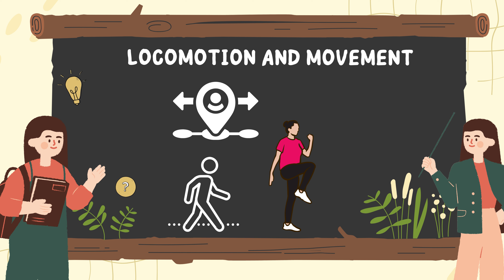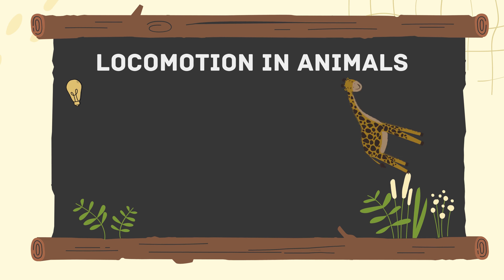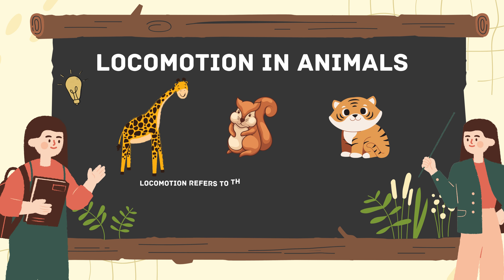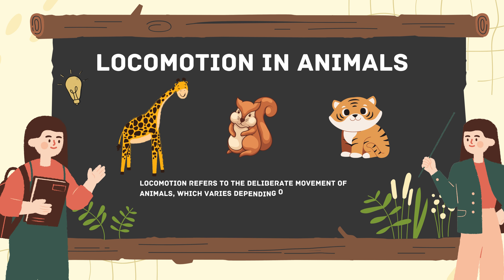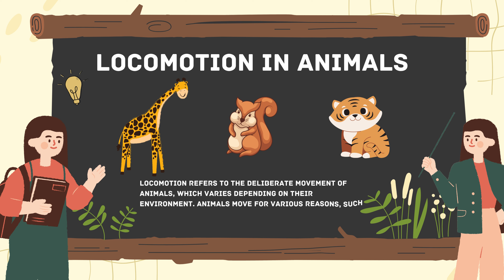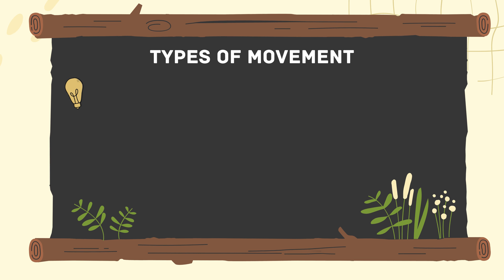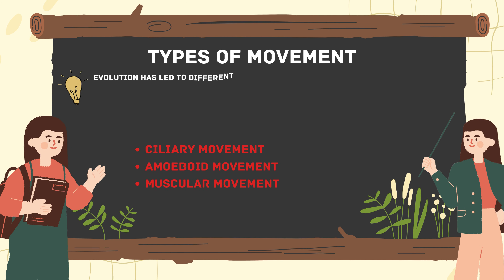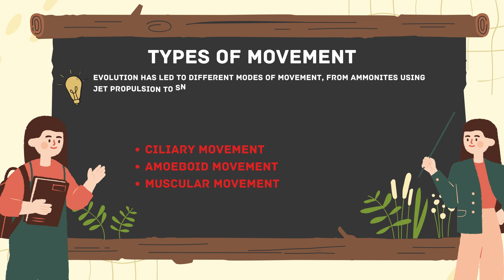Starting with the introduction to locomotion in animals: locomotion refers to the deliberate movement of animals, which varies depending on their environment. Animals move for various reasons such as finding food, shelter, mates, favorable climates, or escaping predators. Evolution has led to different modes of movement, from ammonites using jet propulsion.